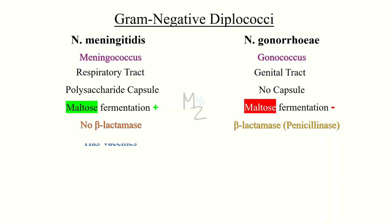Neisseria meningitis has certain vaccines that can work against it, and there are no vaccines that can work against Neisseria gonorrhea.